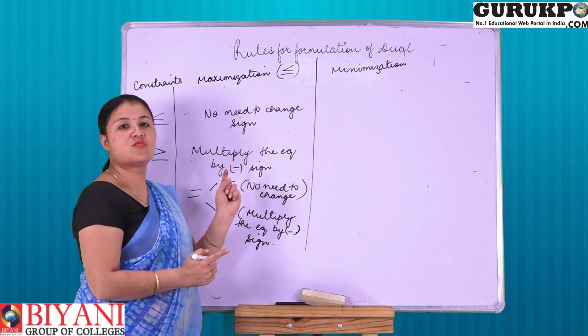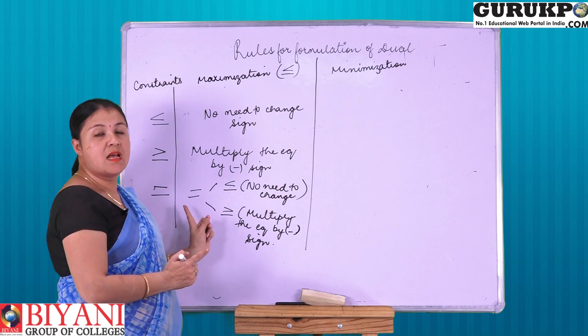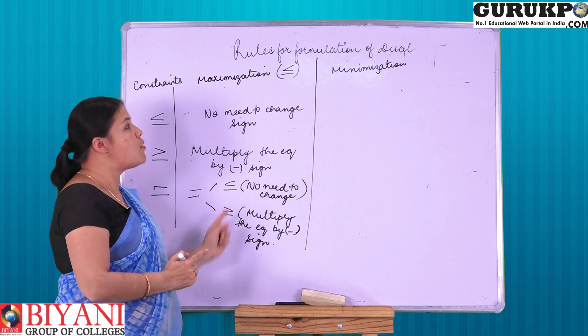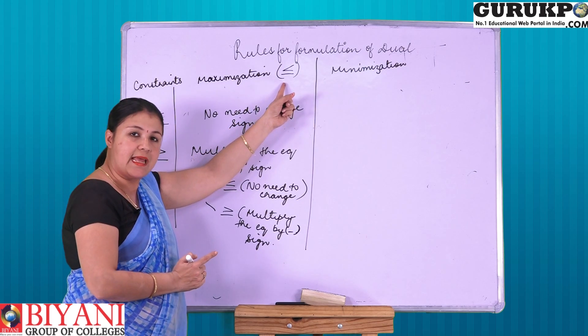And for minimization, we will repeat the same step — that is, we multiply the whole equation by a negative sign. In this way, the whole constraints get transformed into maximization sign.